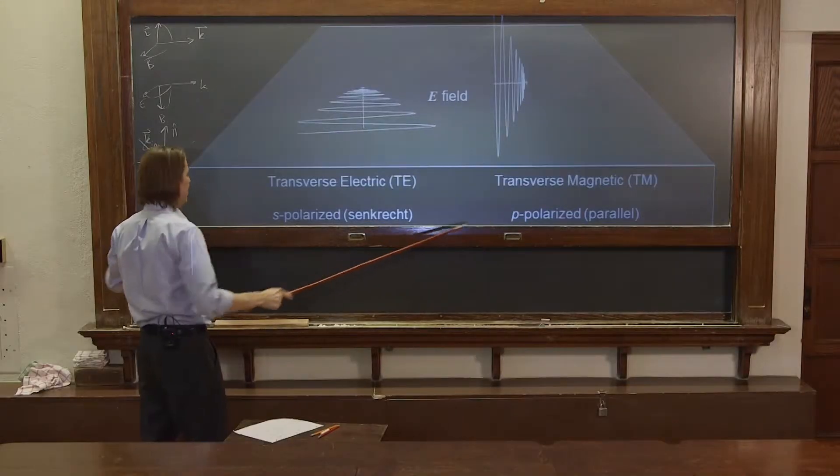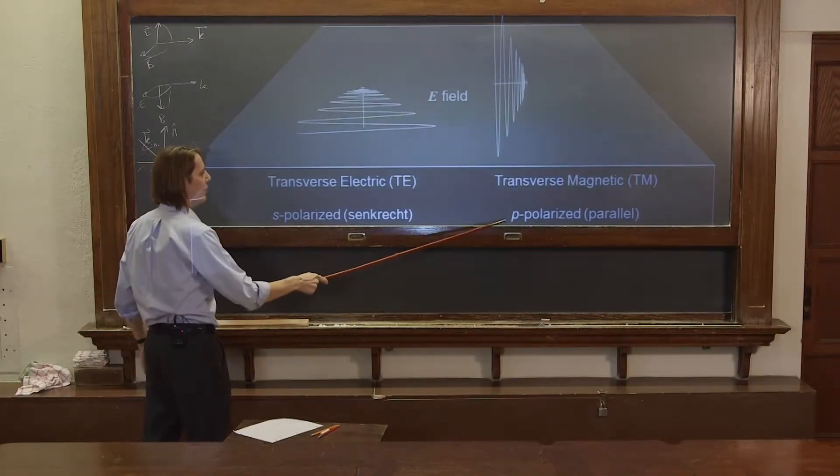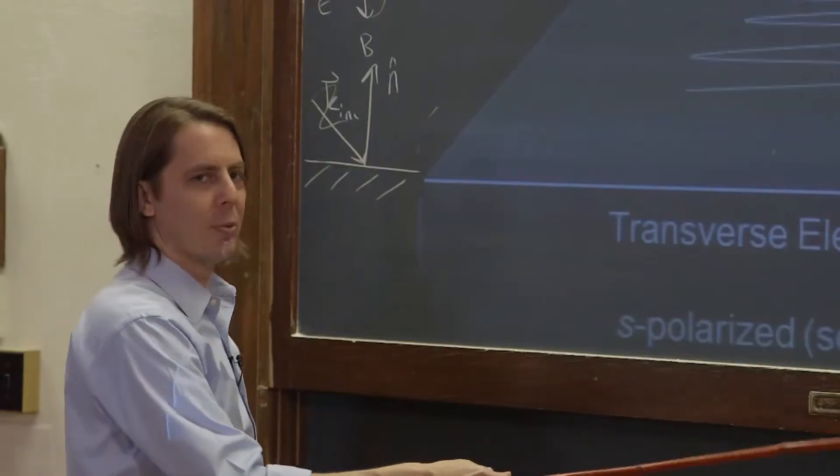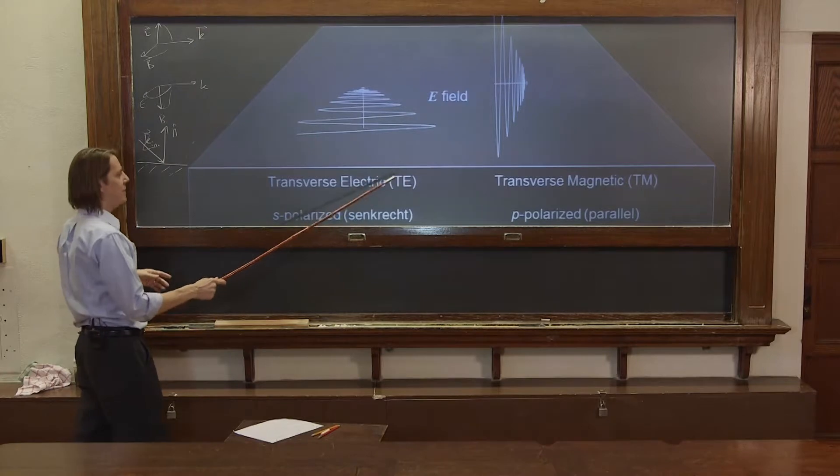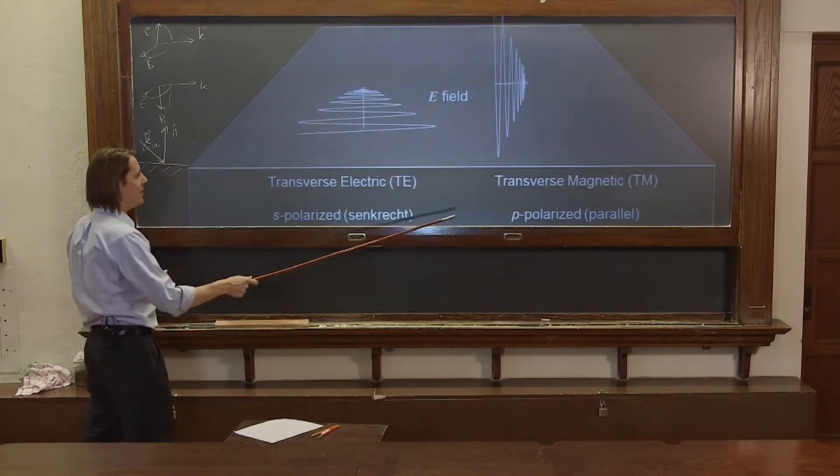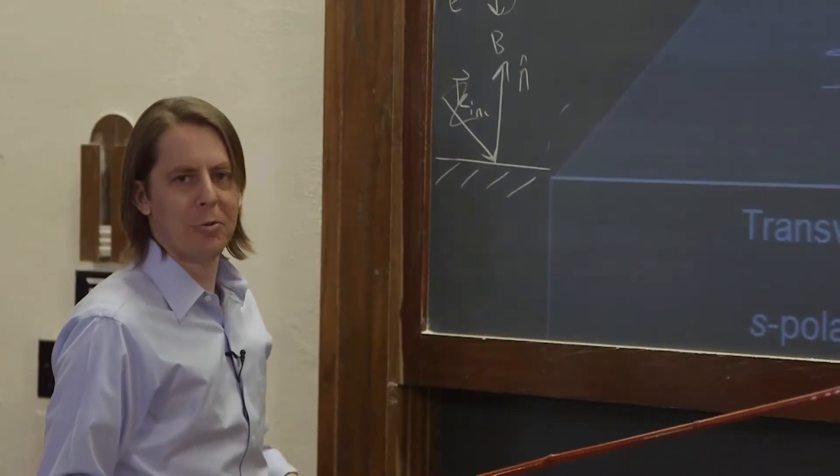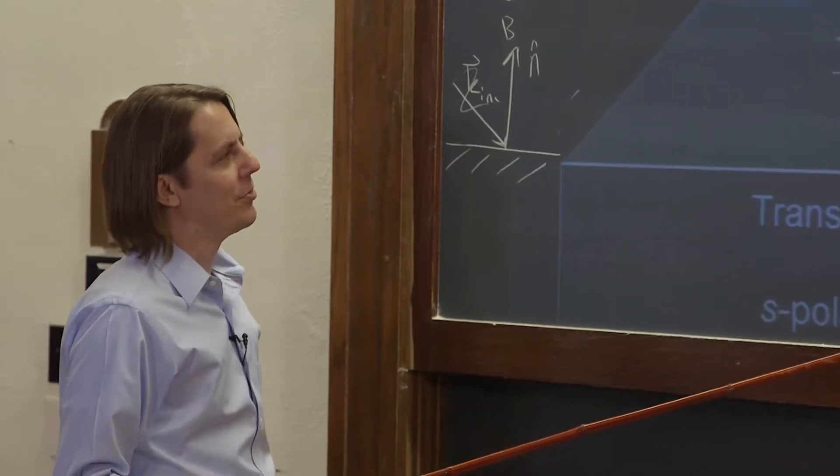And then there's also, if this is S polarized, this is called P polarized. And that P stands for the German word for parallel, which is parallel. So half the time they're called TE, TM, half the time it's S and P. It just depends on the book you're reading and the focus of the book.